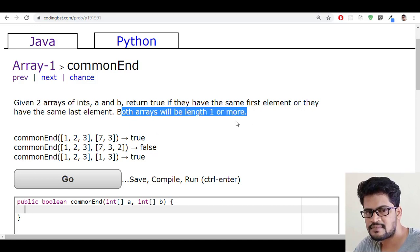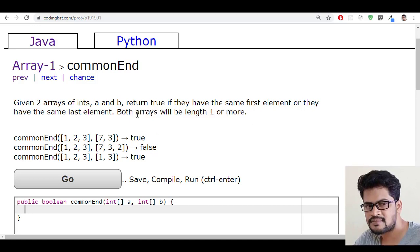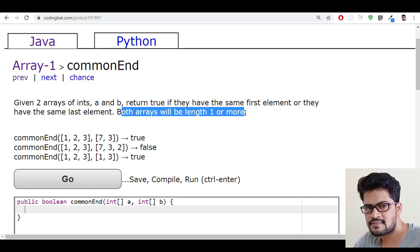Both arrays will be length one or more. First of all, they confirm that both arrays will be minimum one element length or more. So you don't need to check for length one or not. You don't need to check for index out of bound exception because minimum one element length is guaranteed.